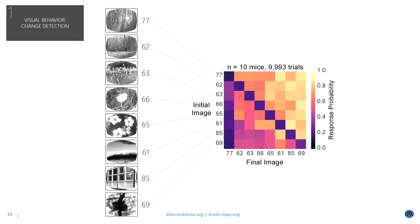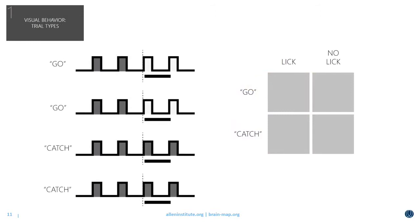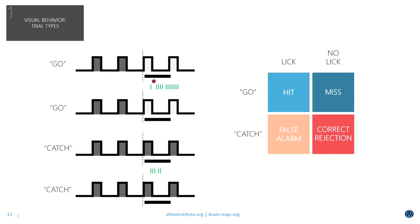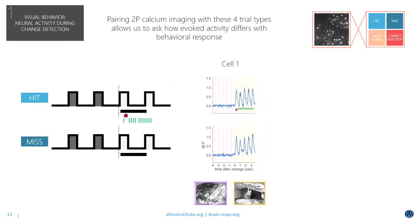On trials when the stimulus identity changes and the animal successfully licks in the response window, we call this a hit and the animal gets a reward. If it fails to respond in the window, we call this a miss. On trials when the stimulus identity does not change but the animal licks in the response window, we call this a false alarm. If the animal correctly withholds its response, we call this a correct rejection. We compare these four trial types with two-photon calcium imaging to ask how evoked cortical activity differs with behavioral response.